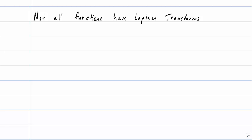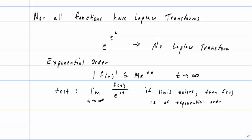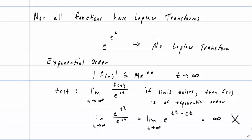Not all functions have Laplace Transforms. Something like e to the t squared does not have a Laplace Transform. The key is whether or not the function is of exponential order. A way to test this is to take the limit as t goes to infinity of f of t divided by e to the ct — if the limit exists, then f of t is of exponential order. If we look at e to the t squared, as the limit goes to infinity this also goes to infinity, so e to the t squared is not of exponential order. But most of the examples we'll be doing will be of exponential order and we will be able to find the Laplace Transform.